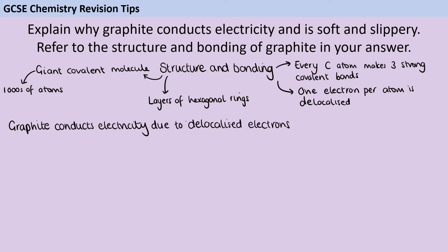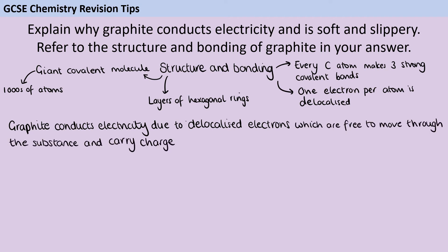Let's think about conducting electricity. Graphite conducts electricity due to delocalized electrons — that's the mark that everybody always gets when there's a little two-marker asking about graphite conducting electricity. Everyone gets 'delocalized electrons' and then most people stop writing, but we need to finish the story. Graphite conducts electricity due to delocalized electrons which are free to move through the substance and carry charge. Make sure you say 'through' rather than 'throughout,' because 'through' implies it's going in the same direction, whereas 'throughout' implies going all over the place — and they are carrying charge as they do so.